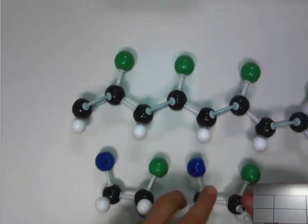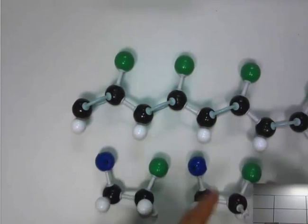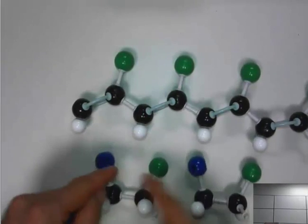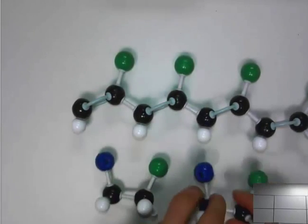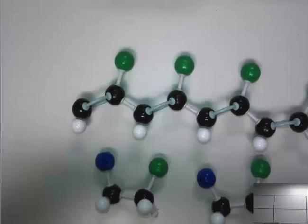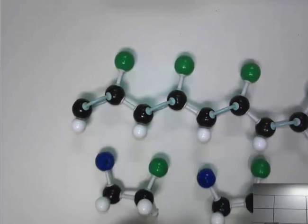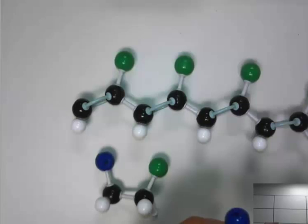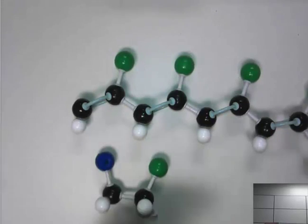Remember, single bonds are free to rotate. And so, you can get configurations whereby we're going back and forth between that cis and trans. And cis and trans really has no more meaning. So, you can't have geometrical isomers when you have that single bond.